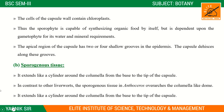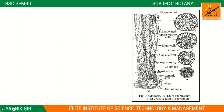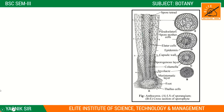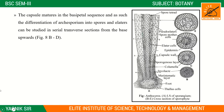In contrast to other liverworts, the sporoginous tissue in Anthoceros surrounds the columella in a dome-like or column-like structure. The sporoginous tissue extends like a cylinder around the columella from the base to the tip of the capsule.